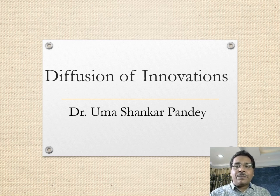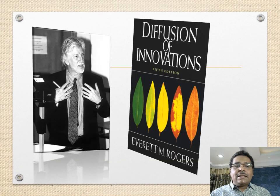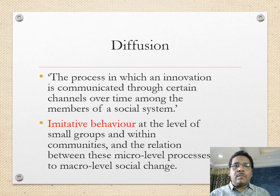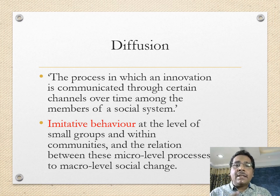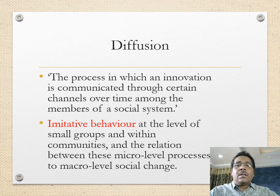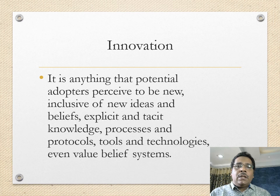This has been popularized by Everett Rogers, and we'll draw heavily from his book in its fifth edition. Diffusion is the process in which an innovation is communicated through certain channels over time among members of a social system. The channels, the spread of time, and the members of the social system are all important. One way it spreads is through imitative behavior at the micro level, which builds up to macro-level social change.